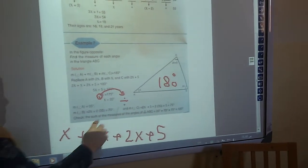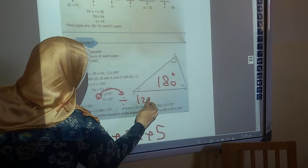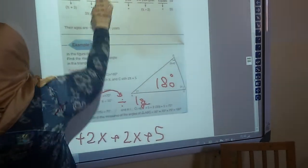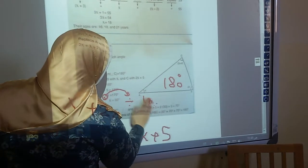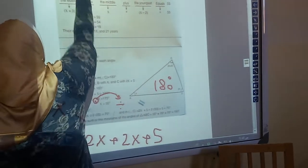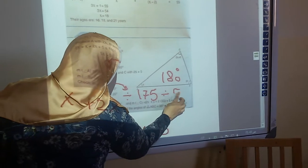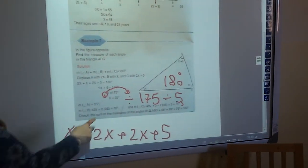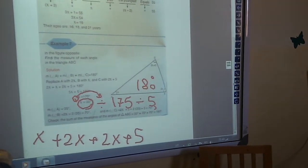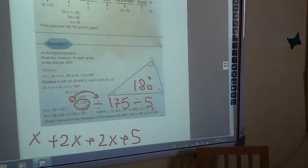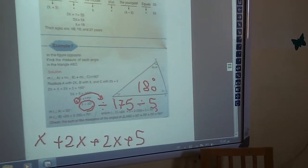So it will be 175 divided by 5. I'm sorry, 35. 175 by 5 will give you 35. So now I have the x. I can get any measure of any angle.